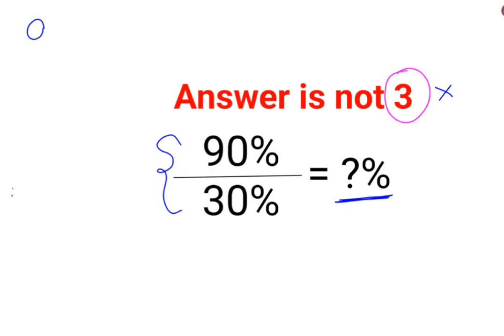First, let's understand - whenever you have a percent, in order to do mathematical operations, we need to convert it into a fraction. So 90% in terms of fraction is 90 upon 100. So we have 90 upon 100 divided by 30 upon 100.